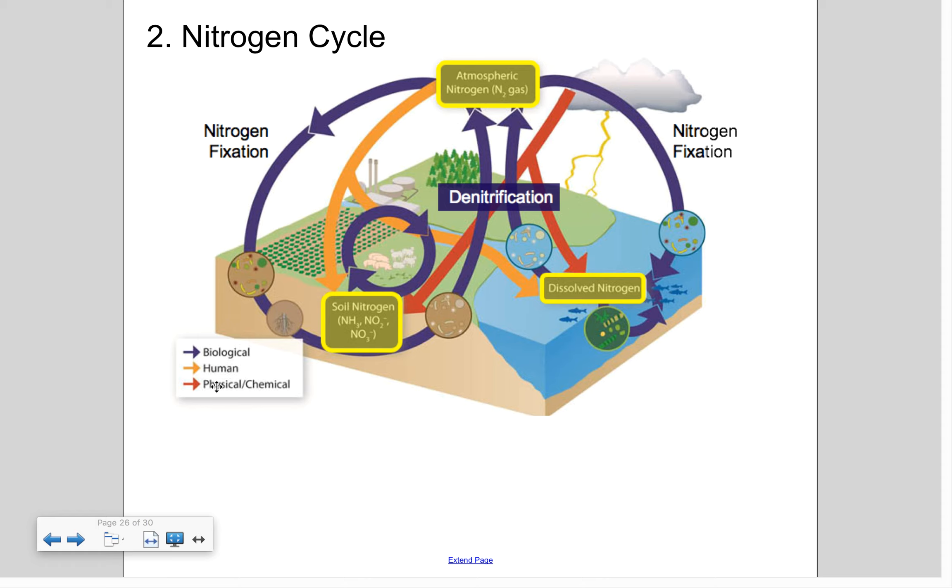And then finally, we have the human component. Our involvement obviously has skyrocketed because nitrogen is used as fertilizer. So we use this process around the world. We've been able to fix more nitrogen than all natural processes combined. But it shows that it's being run off in rivers and lakes into the ocean, where it's dissolved. And some of it does get denitrified. So that's the human impact of the nitrogen cycle.